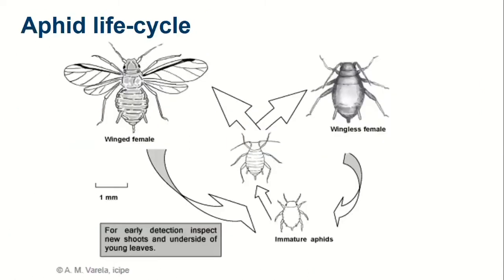A lot of people have been searching aphid life cycles, so I want to be clear: in Australia we don't have a sexual life cycle, it's asexual. A winged female lands on a suitable host — crop or grass — and gives birth to live young. As soon as that nymph is birthed it already has babies being produced inside it, and those embryos are also producing babies. This is one of the reasons that aphids can build up in numbers quite quickly.